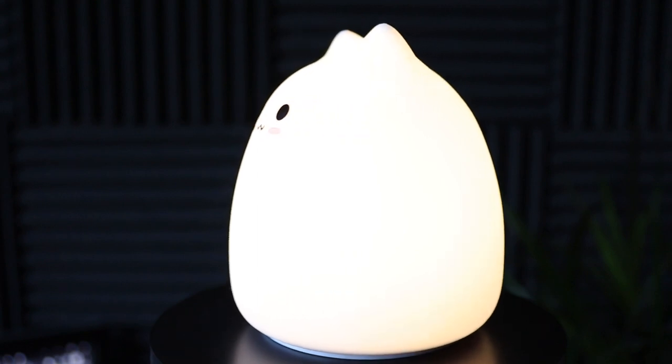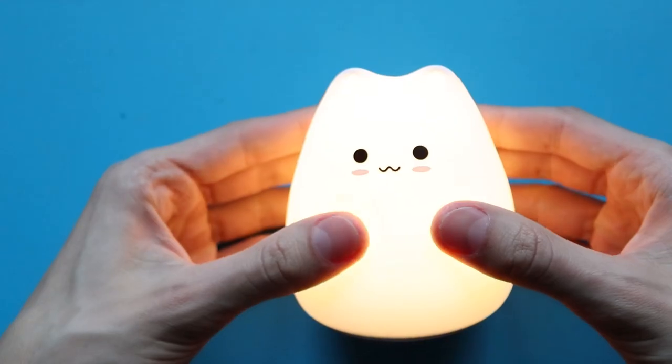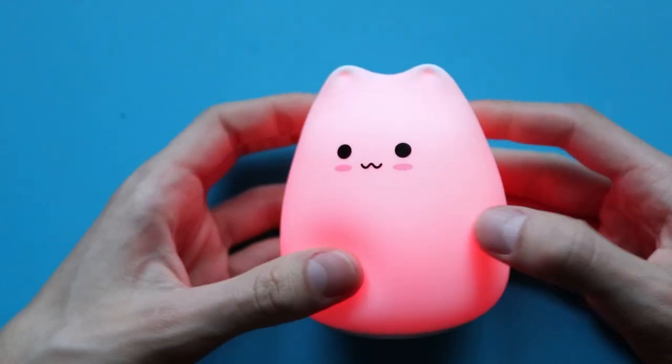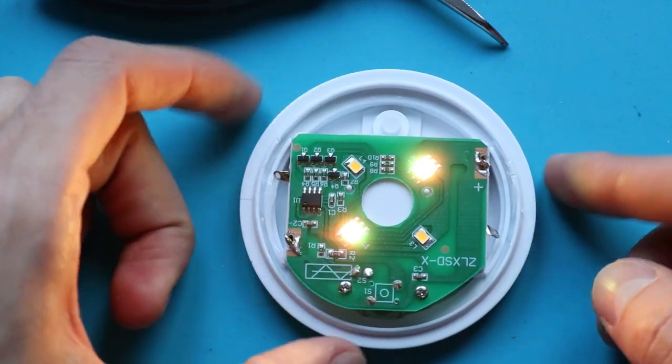First of all, let's see what this lamp can do. It changes regimes in a very interesting way when it gets hit or squeezed. Apparently it has RGB LEDs inside, which are controlled by some algorithm, because colors are changing.